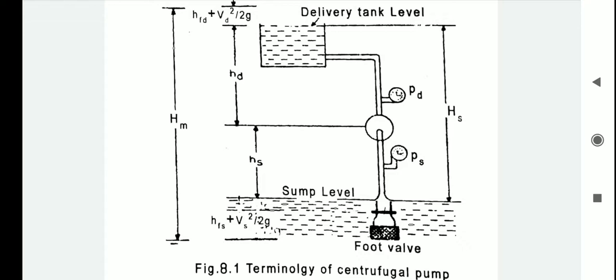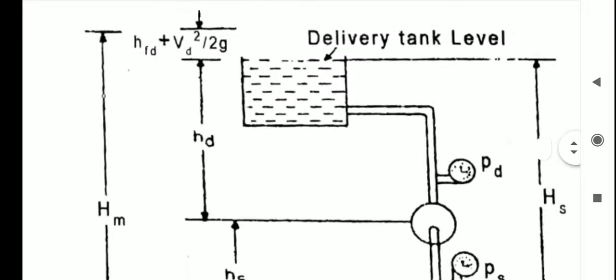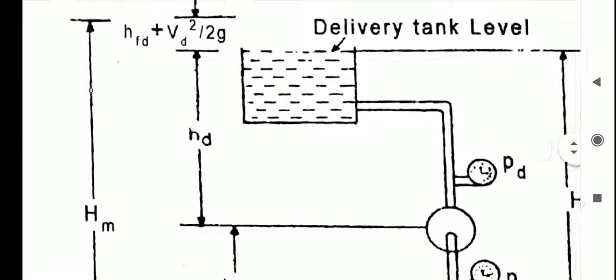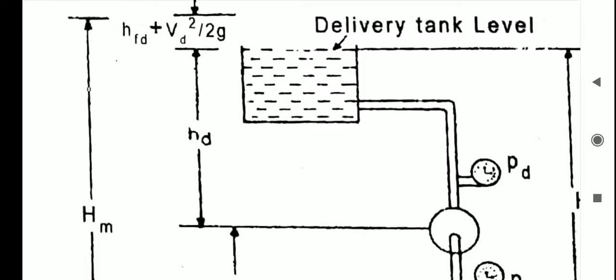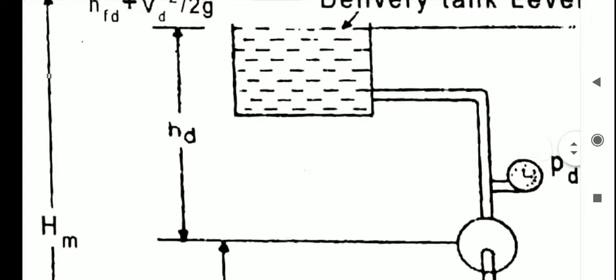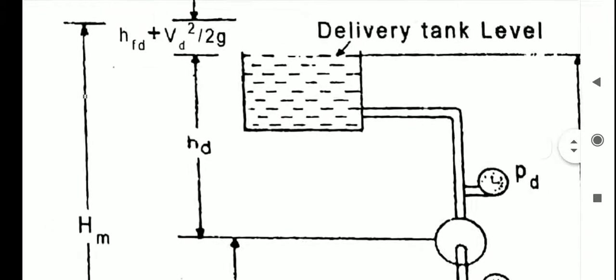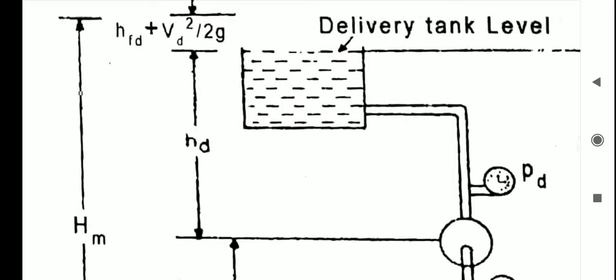The second part is delivery head, that is HD, denoted by HD. It is the vertical height between the center line of the pump and the water surface in the tank to which the water is delivered. As you can see from this figure, that is HD.